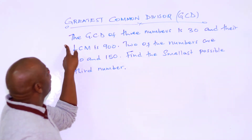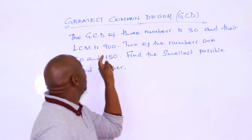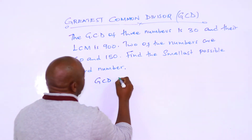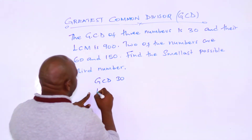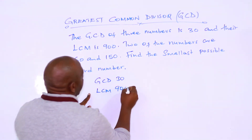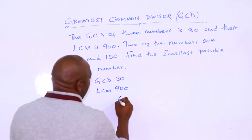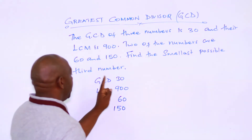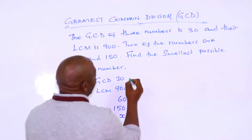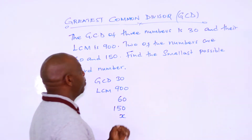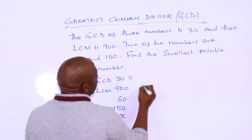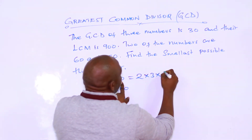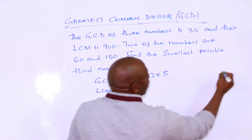On to the next question — your turn. The GCD of 3 numbers is 30 and their LCM is 900. Two of the numbers are 60 and 150. Find the smallest possible third number — we call it X. Start by getting the factors. Factors of 30 are 2 times 3 times 5. Factors of 900: by 2: 450, by 2: 225, by 3: 75, by 3: 25, by 5: 5, by 5: 1.